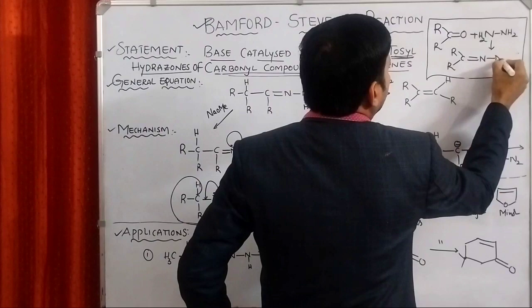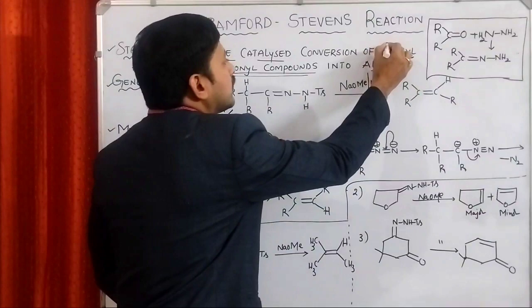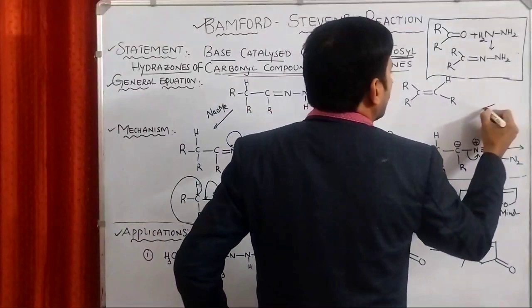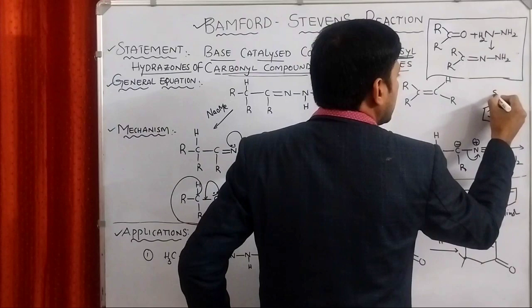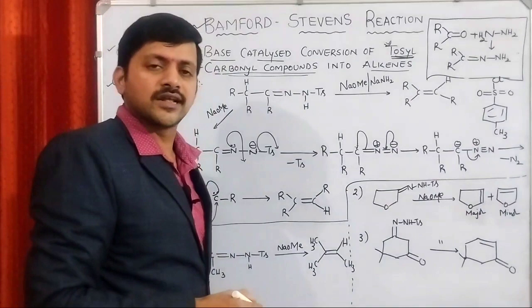But we need a tosyl group. How can we get the tosyl group from this compound? Para-toluene sulfonyl CH3-S double bond O, double bond O-Cl. Para-toluene sulfonyl chloride. If this one is treated with this particular moiety, the removal of HCl takes place.